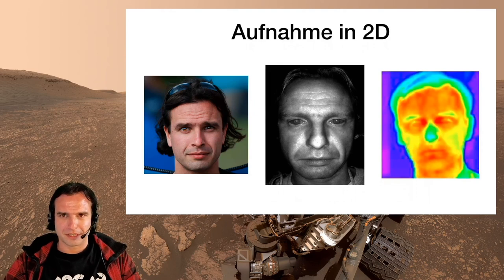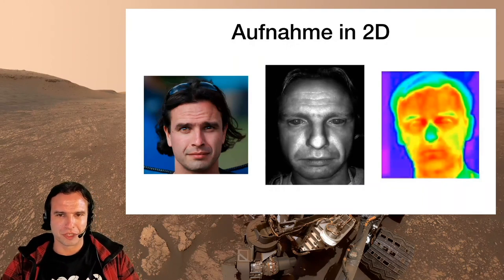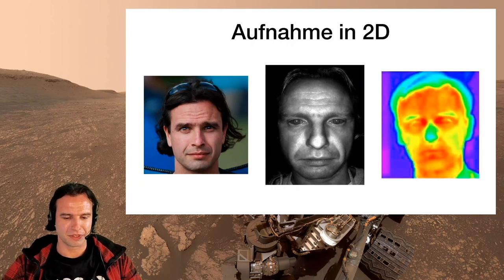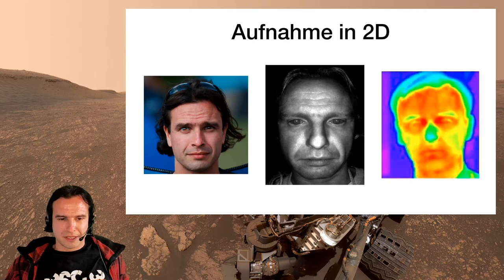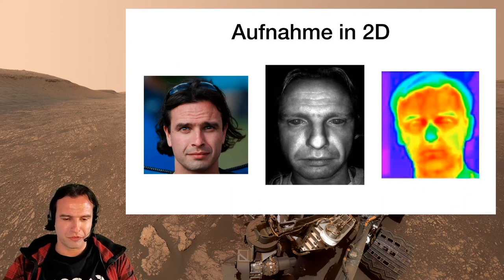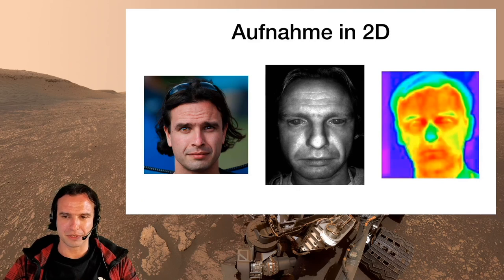Let's begin with a short introduction on how facial recognition works. There are two different possibilities to take a picture: usually you have a 2D picture, a normal photo, but there's also the possibility to have 3D pictures. In 2D you can work in different wavelengths of the spectrum — the optical spectrum we usually see, shown on the left; near infrared, shown in the middle, which is close to visible red light; and far infrared, shown on the right.